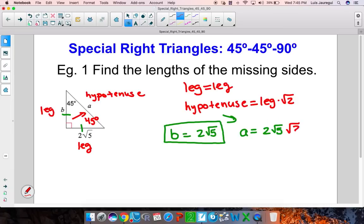Now, using the properties of radicals, I can conclude that a is equal to 2 times the square root of 5 times 2, which is 10. That's already in simplest form. Therefore, I can say that the length of the leg is 2 square root of 5, and the length of the hypotenuse in this case is 2 times the square root of 10.